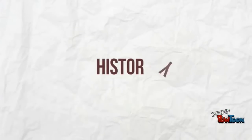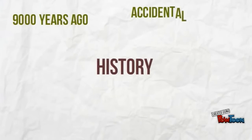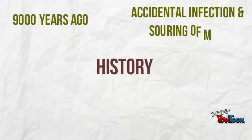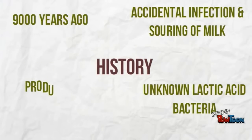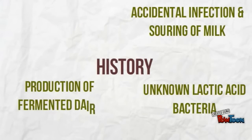History of dairy production started 9,000 years ago in which accidental infection and souring of milk by unknown lactic acid bacteria led to mass production of fermented dairy products.